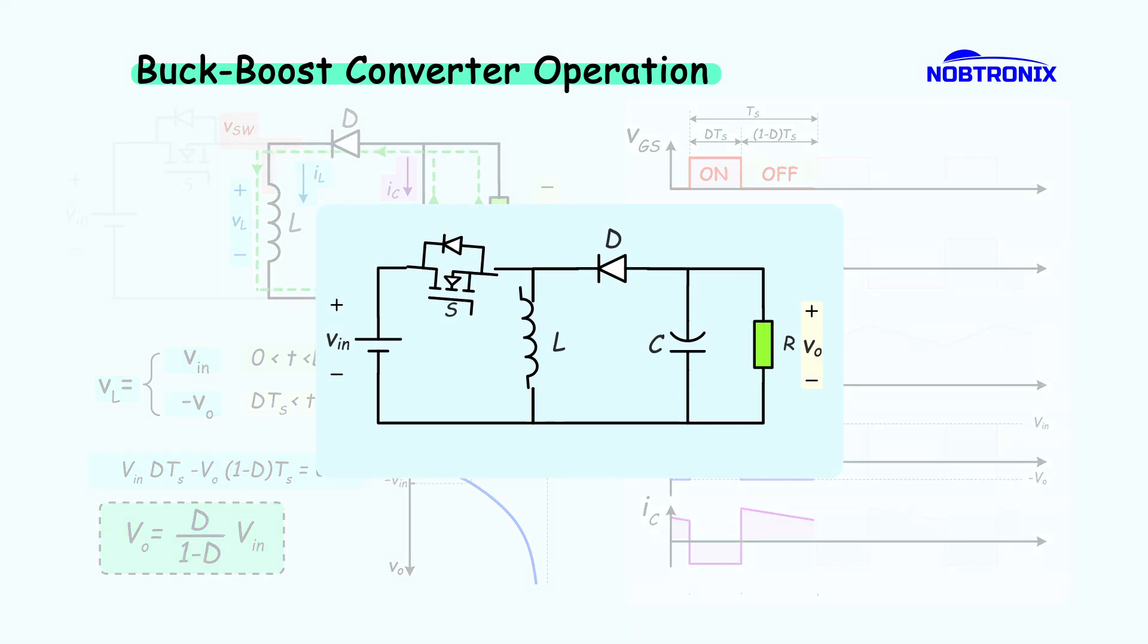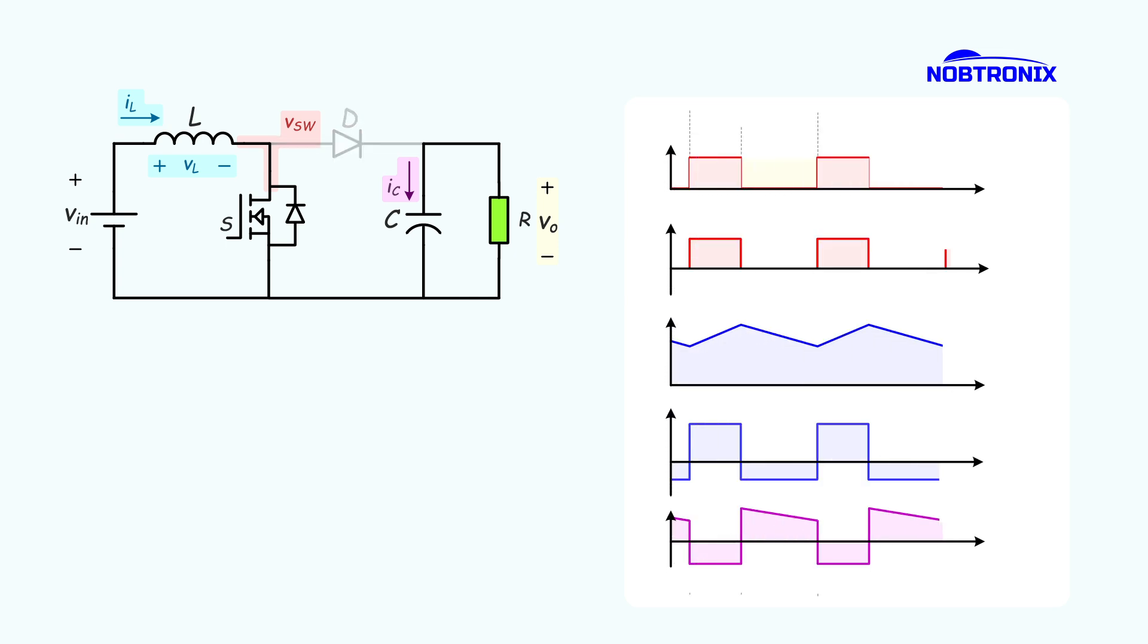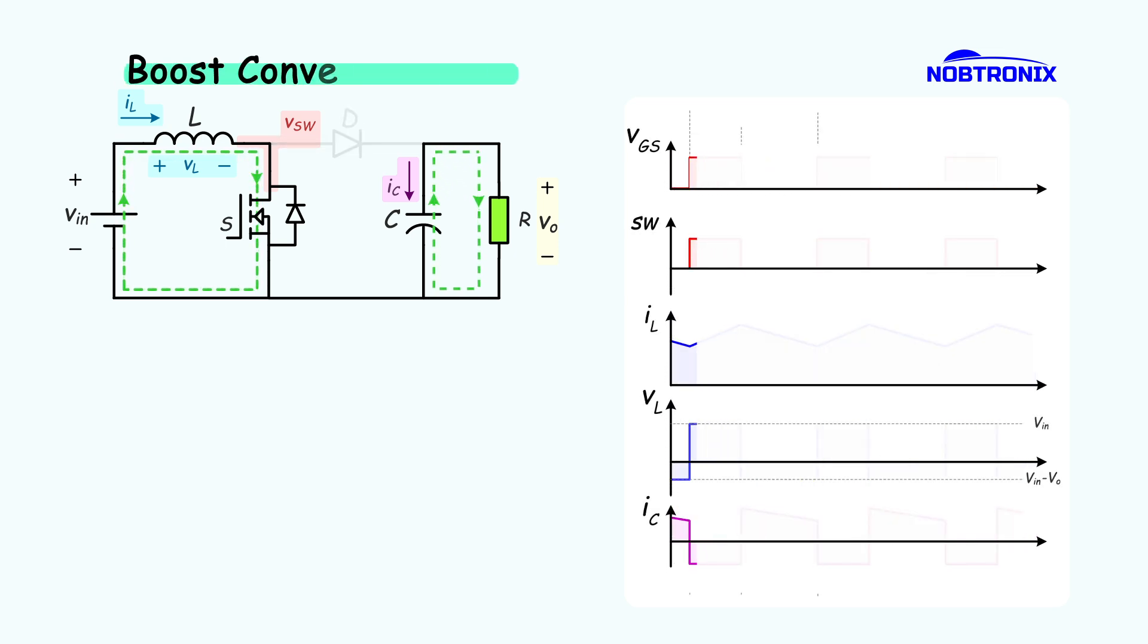Now, if we swap the inductor and MOSFET with each other, we get yet another topology. Right away, you will notice the diode needs to flip to keep the inductor current path when the switch is off, and the capacitor direction needs to change too. When the switch is on, the inductor gets energy from the source. Its current rises linearly, and its voltage equals the input. The diode is reverse biased, so the load gets power from the capacitor.